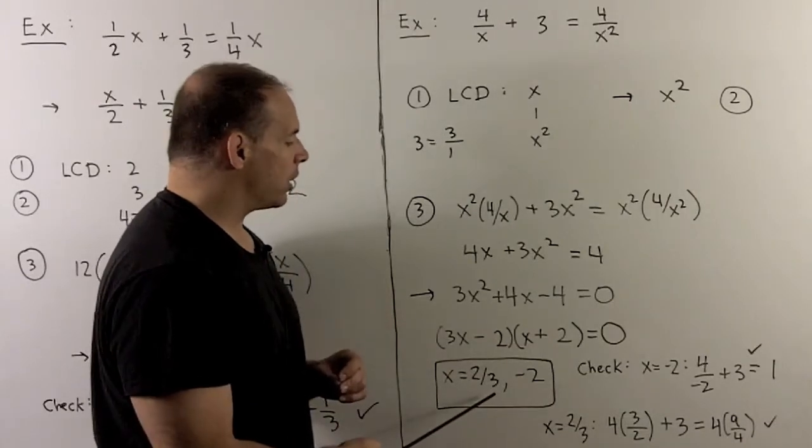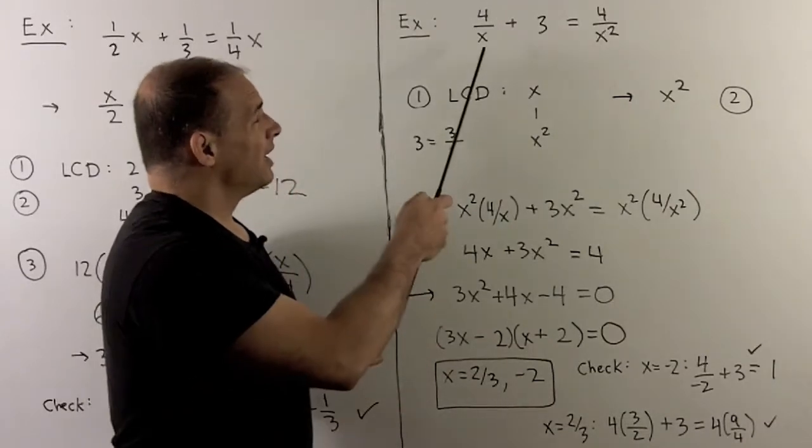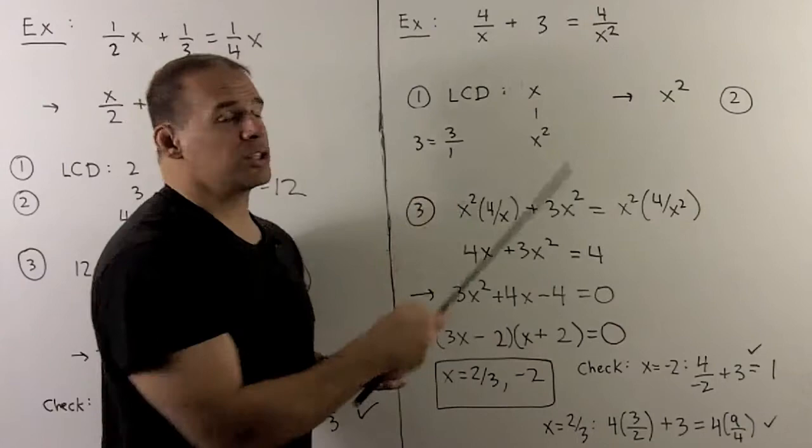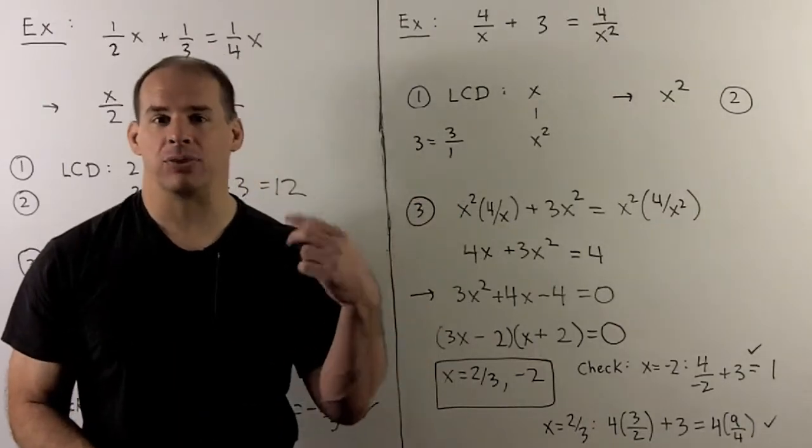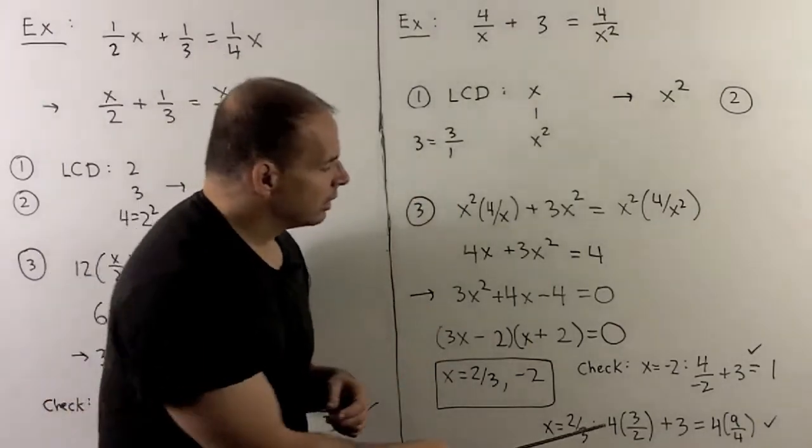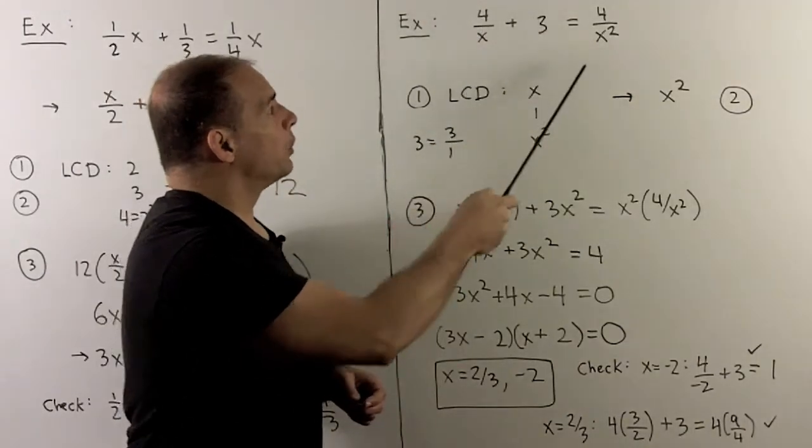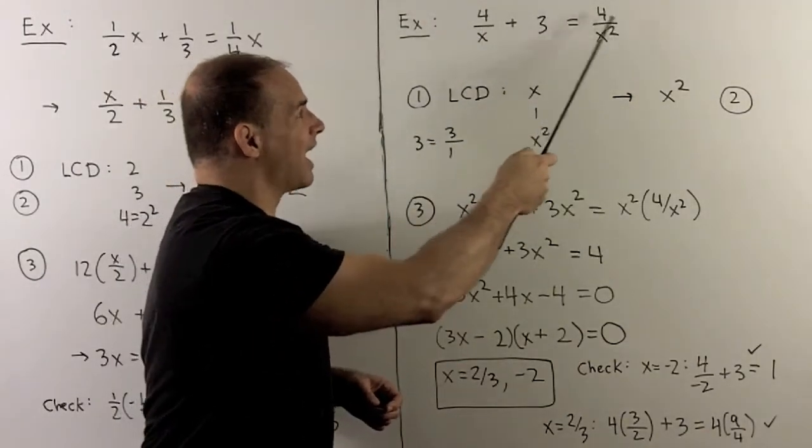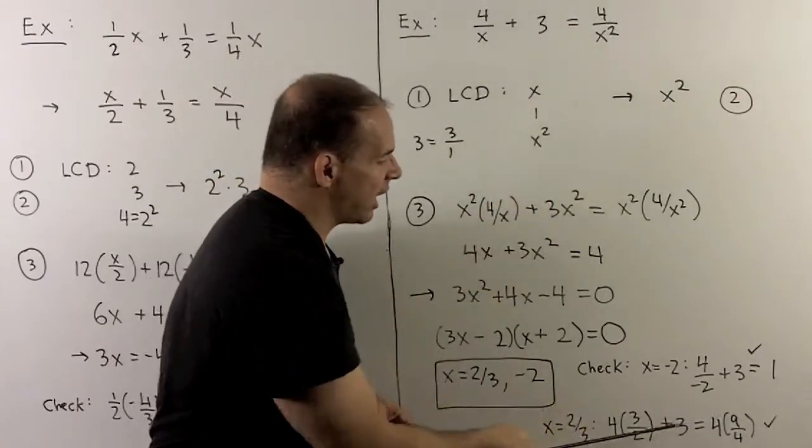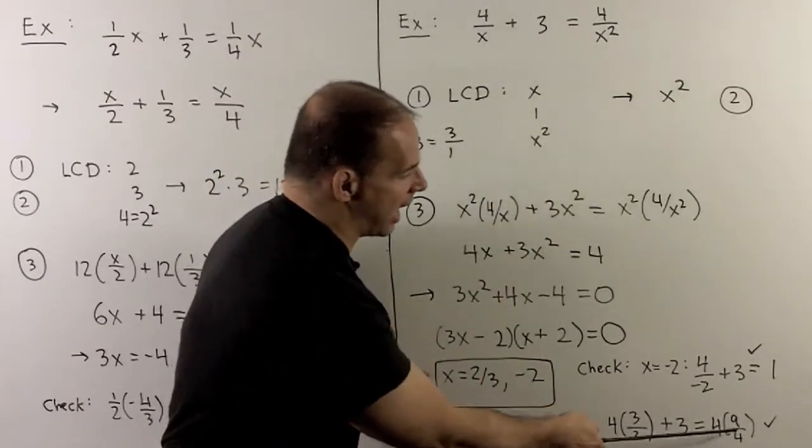If I use x equal to 2 thirds, when I check, if I divide by 2 thirds, that's the same as multiplying by 3 halves. This is going to give me 3 halves times 4. Over here, I'm going to have 4 times 9 fourths. That checks out on each side - both sides are equal to 9.